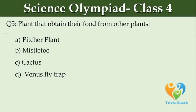Plants that obtain their food from other plants: Option A: pitcher plant, Option B: mystery plant, Option C: cactus, Option D: Venus flytrap.